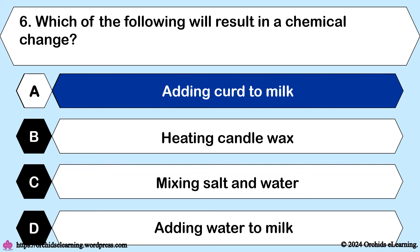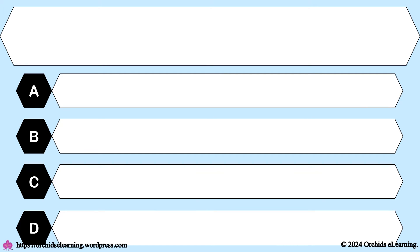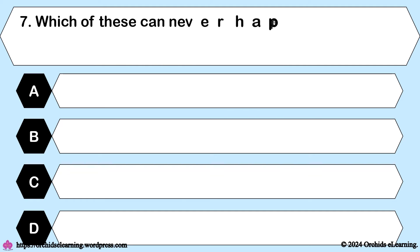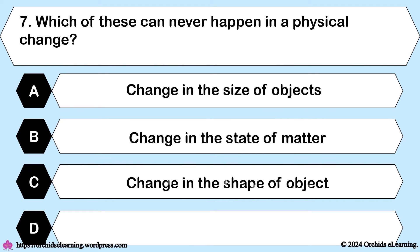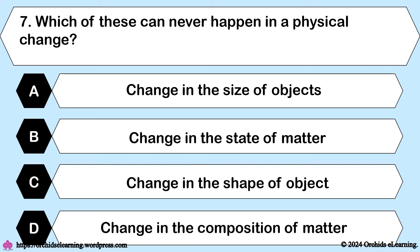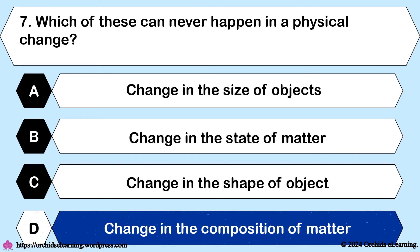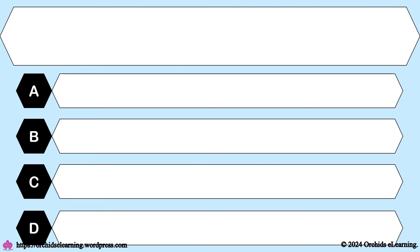Answer: A — Adding curd to milk. Which of these can never happen in a physical change? Answer: D — Change in the composition of matter. Baking of a cake is a —